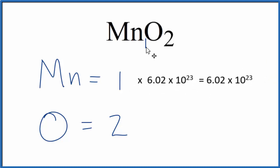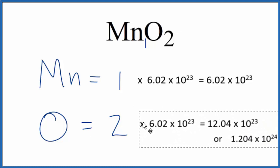For oxygen, we would multiply by 2 - multiply Avogadro's number by the 2 oxygen atoms - and that tells us how many oxygen atoms we have in one mole of MnO2.